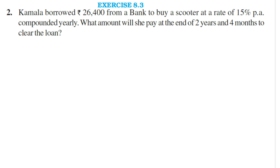Problem number 2. Kamala borrowed Rs. 26,400 from a bank to buy a scooter at a rate of 15% per annum, compounded yearly. What amount will she pay at the end of 2 years and 4 months to clear the loan? To work out this problem, we first find the amount she has to pay at the end of 2 years using the compound interest formula, and then take that as the principal to find the interest for the remaining 4 months using the simple interest formula.